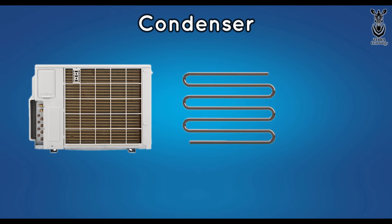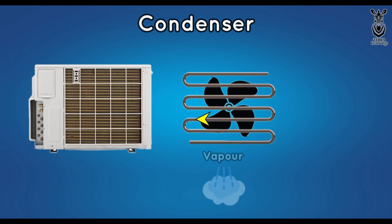Condenser is coil in outdoor. When the refrigerant travels through this coil, the fan that is behind the coil blows air and the temperature of the refrigerant decreases. Thus, when the temperature of the refrigerant decreases, the refrigerant changes from the vapour state to the liquid state.